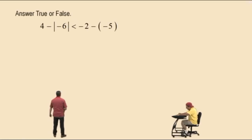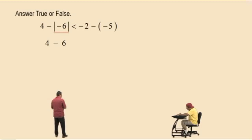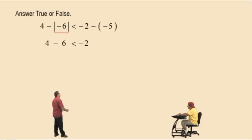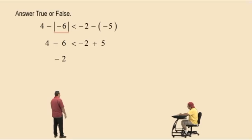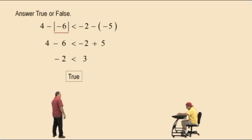Answer true or false: 4 subtract the absolute value of negative 6 is less than negative 2 subtract negative 5. On the left-hand side, follow order of operations — absolute value is a grouping symbol, so evaluate it first. The absolute value of negative 6 is 6, so we get 4 subtract 6, which is negative 2. On the right-hand side, subtracting a negative means add its opposite: negative 2 plus 5 equals 3. Is negative 2 less than 3? True — negative 2 is to the left of 3 on the number line.